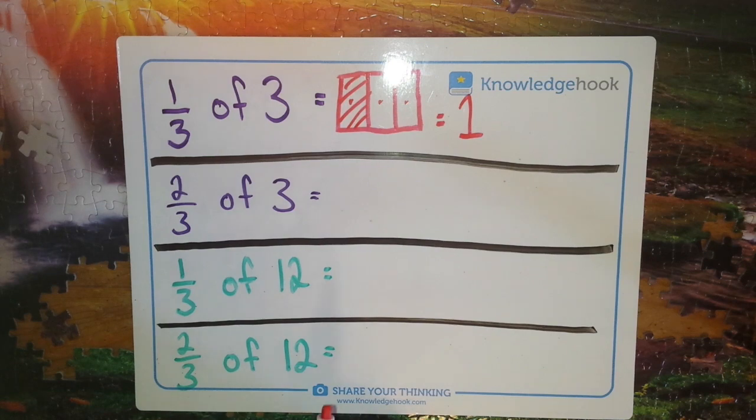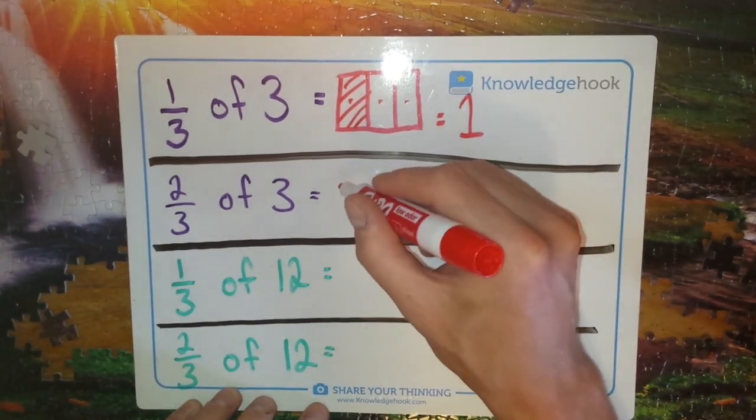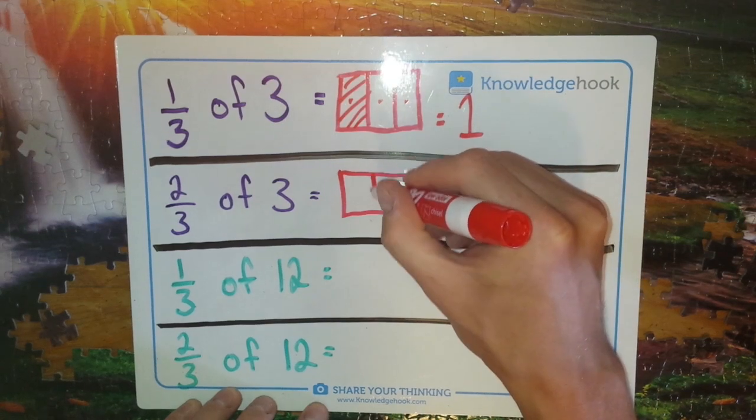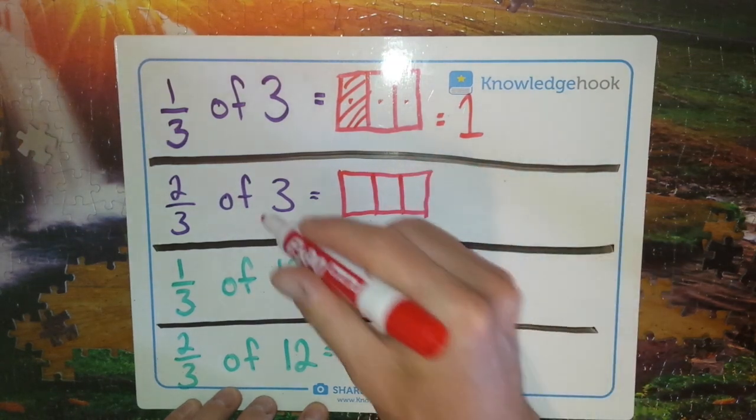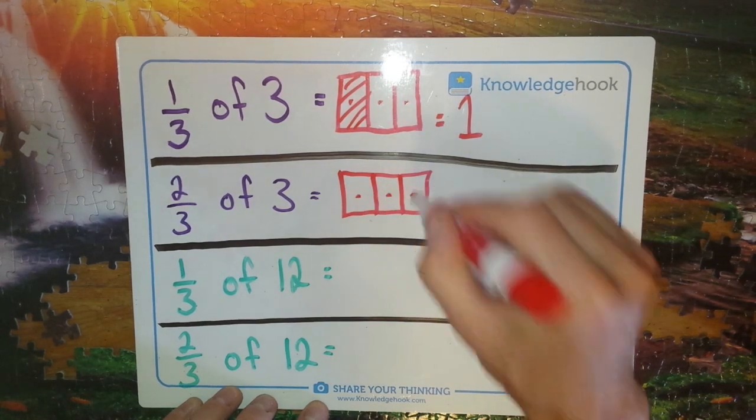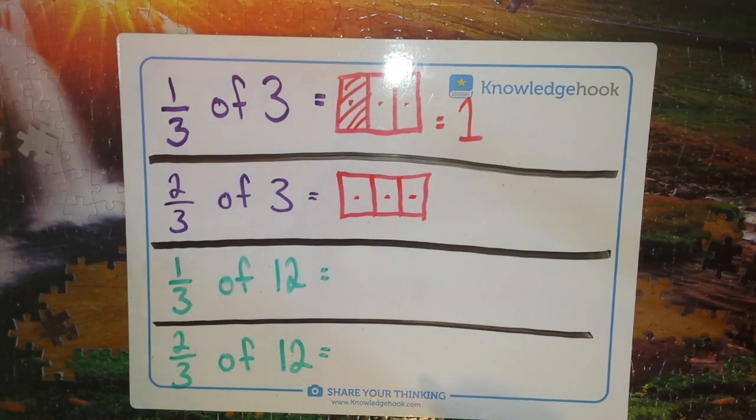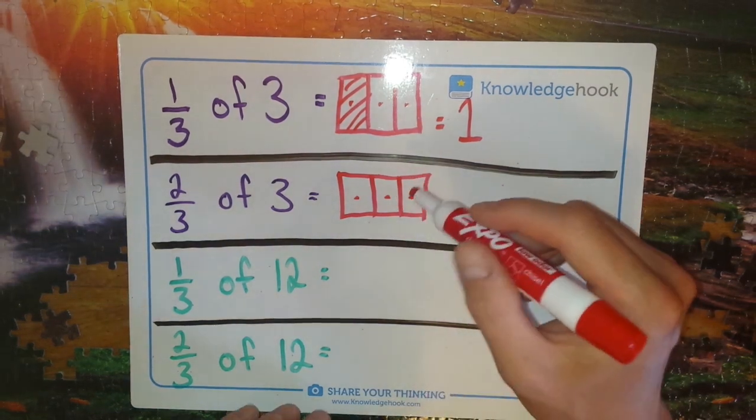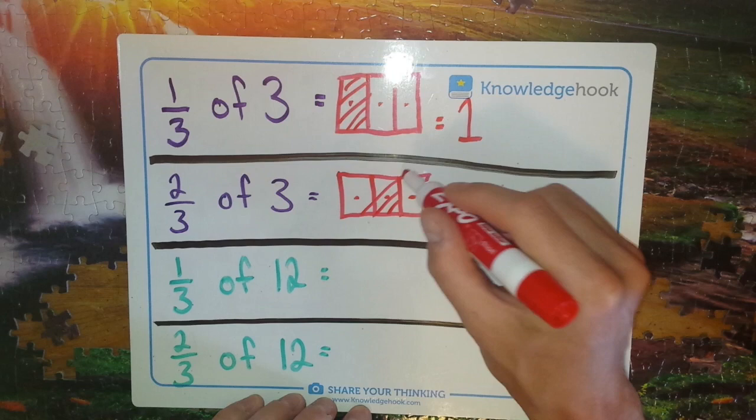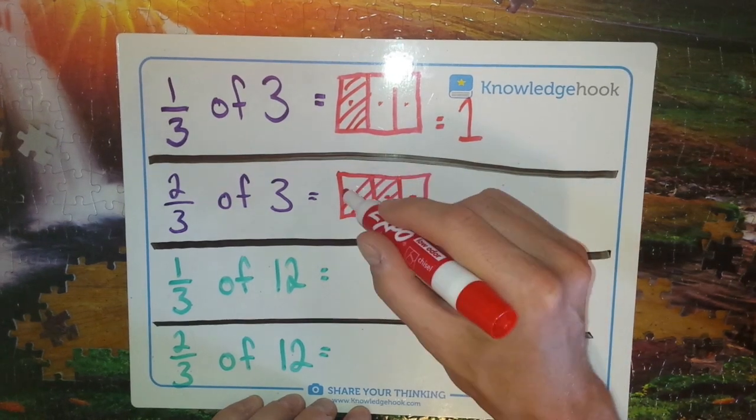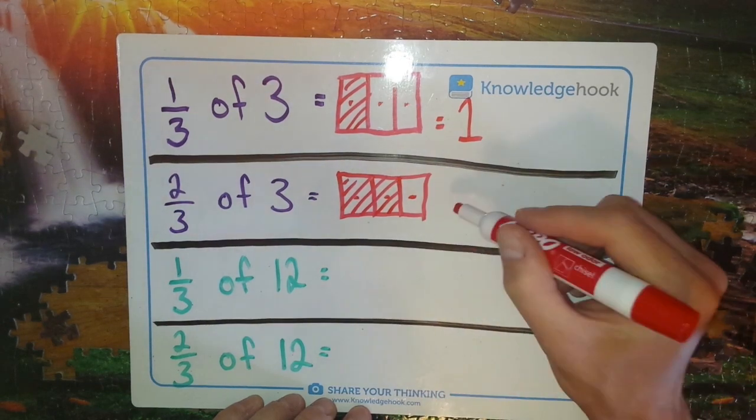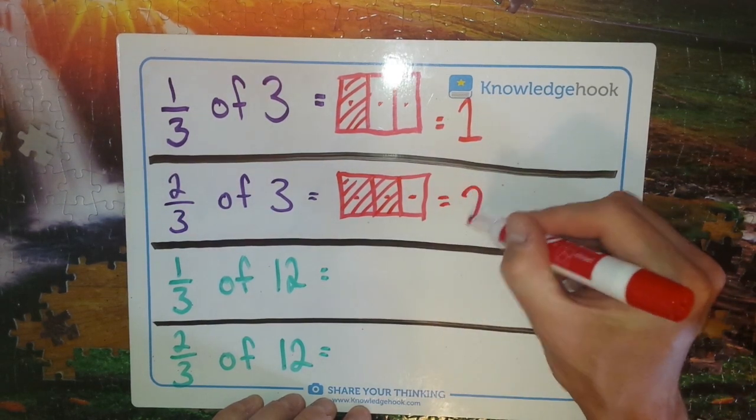So now I'm going to look at two thirds of three, and I'm going to do the exact same start. Show my picture here. And I'm going to share those three items between those three groups - one, two, three. But now if I'm talking about two thirds of three instead of one third, then just like we used the fraction pictures, I'm just going to highlight two thirds instead of one third. So now if I add up what I have highlighted here altogether, two thirds equals two.